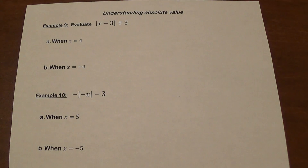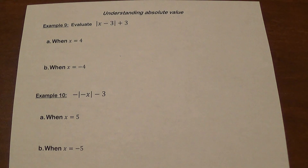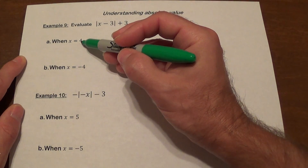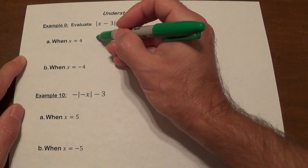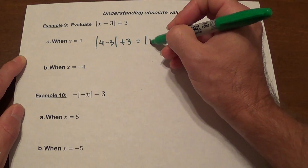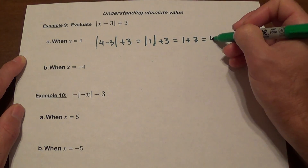Example 9: we have an algebraic expression containing an absolute value that we need to evaluate for different values of the variable. The expression is the absolute value of x minus 3, plus 3. When x is 4, we substitute: the absolute value of 4 minus 3 is the absolute value of 1, which is 1, plus 3. The answer is 4.